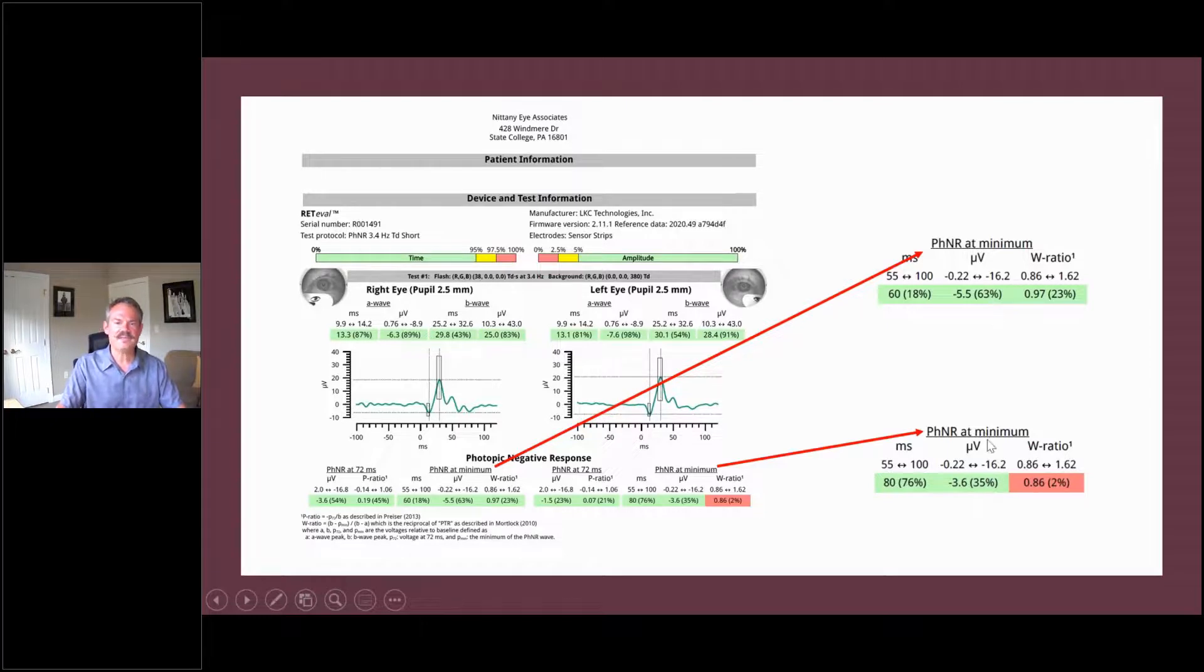So even though we're only being flagged on the W ratio in the left eye, when we dig into these percentages and the differences between the two, the difference between 76% and 18% is huge, and between 35% and 63%. That's the information I need to say there's definitely something happening in this left eye. This left eye is being stressed. We need to take more aggressive action to get this pressure down.